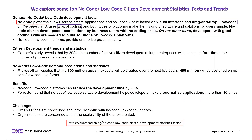We go through some development facts, statistics, and trends. No-code platforms allow users to create application solutions fully based on a visual interface with drag and drop. Low code, on the other hand, uses a bit of coding. Both types of platforms make software solutions simpler for users. No-code citizen development can be done by business users with no coding skills, whereas developers with coding skills are needed for low-code platforms.